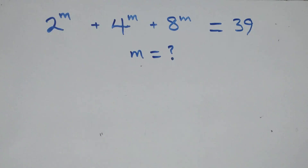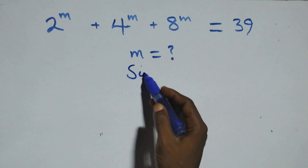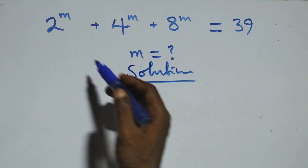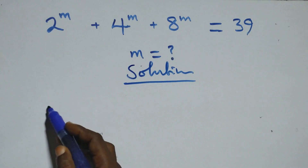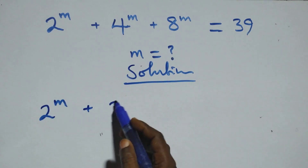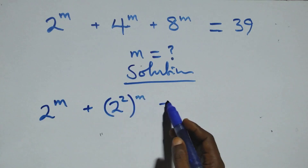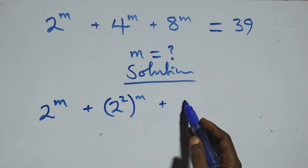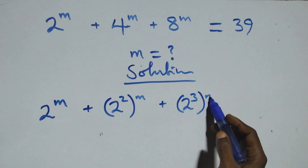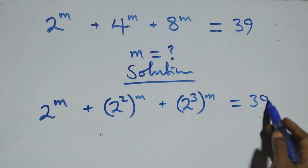Hello, you are welcome. How to solve this nice exponential equation. We can rewrite this and we have 2 raised to power m, plus 4 can be written as 2 squared which is raised to power m, plus also 8 can be written as 2 cubed, so 2 raised to power m, then equals to 39 on this side.